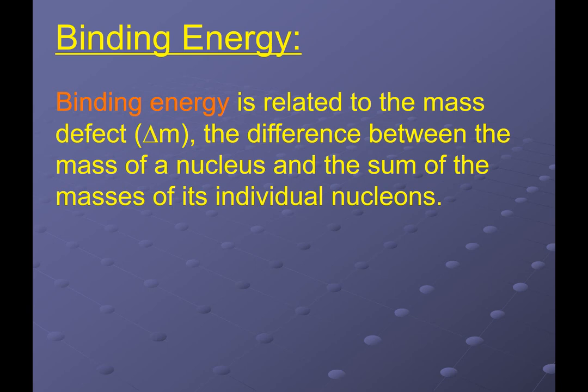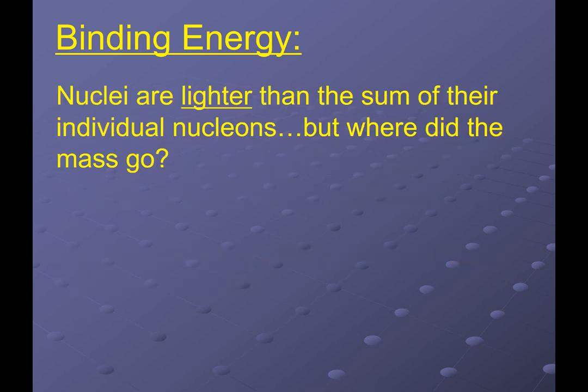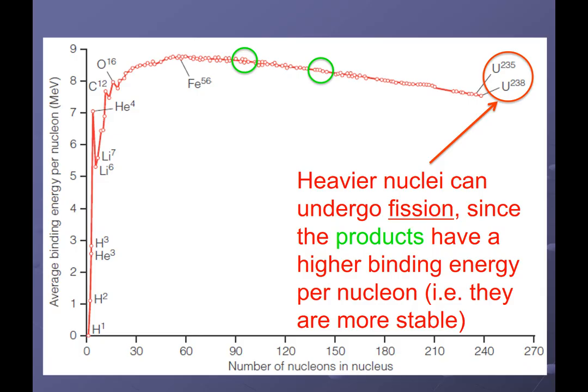Binding energy also comes from the mass defect. The mass defect is how much mass is lost if I add up all the individual particles themselves and compare it to the mass once the atom forms. The nuclear mass is lighter — the equivalent mass that's lost is converted to energy that gets released. We can use Einstein's equation E = mc² with c = 3 × 10⁸ m/s to calculate how many joules of energy were actually produced.